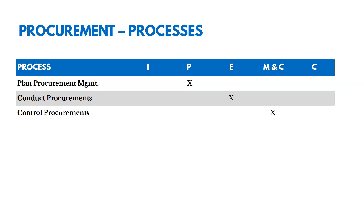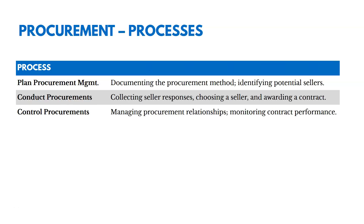There are three processes in this chapter: one in planning, one in executing, and another in monitoring and controlling. With Plan Procurement Management, we're documenting our procurement method — how we're going to get the things we need from outside vendors — and identifying potential sellers. Then we conduct procurements, collecting seller responses about cost and timeline, choosing a seller, and awarding a contract. In Control Procurements, we monitor procurement relationships and track contract performance.